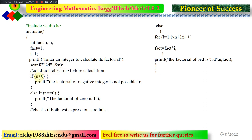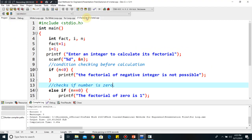The first condition is: if n is less than zero — a negative number — the control goes there and printf shows 'factorial of negative integer is not possible'. Then in the else-if ladder, if n equals zero, it tells you 'factorial of zero is one'. If both conditions are not satisfied, control goes to else, where we have the for loop to calculate factorial for a positive number.